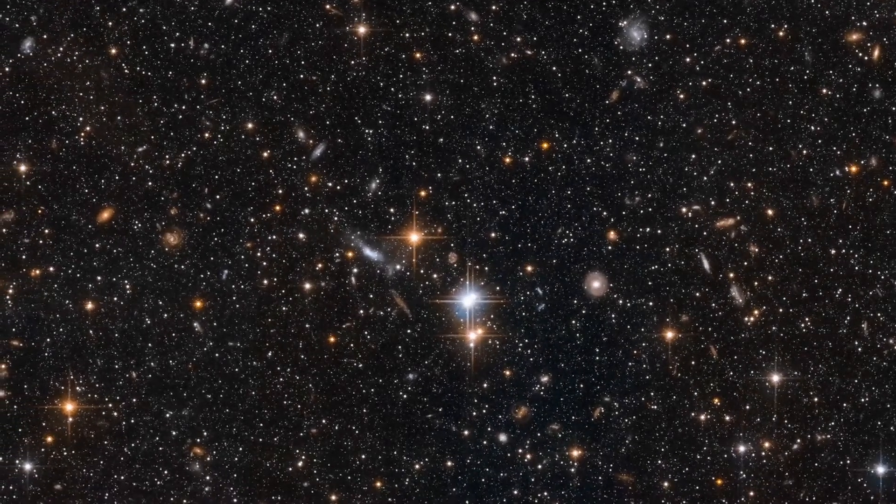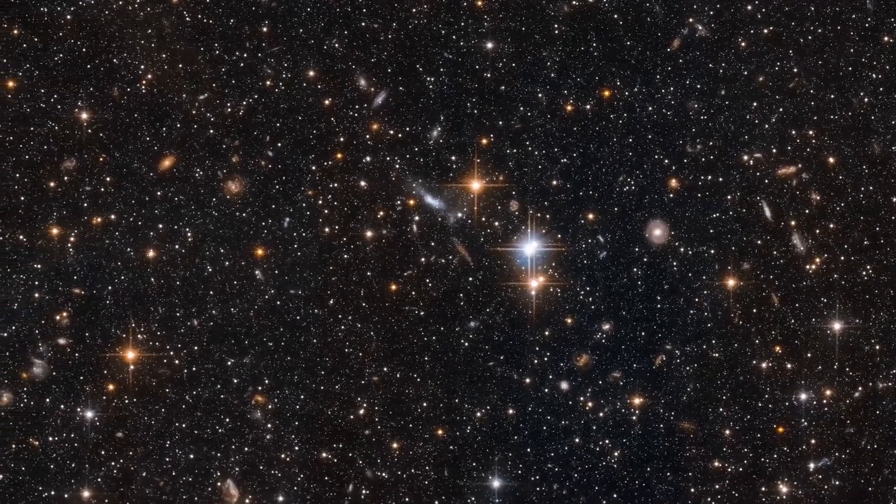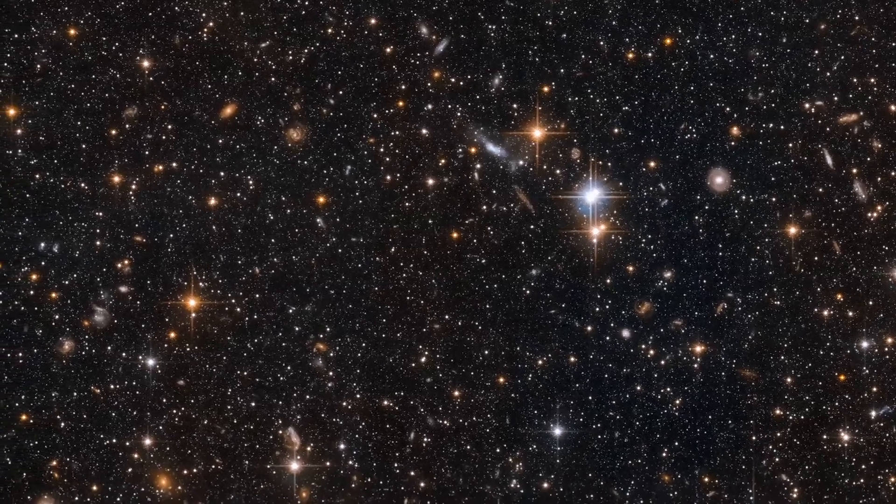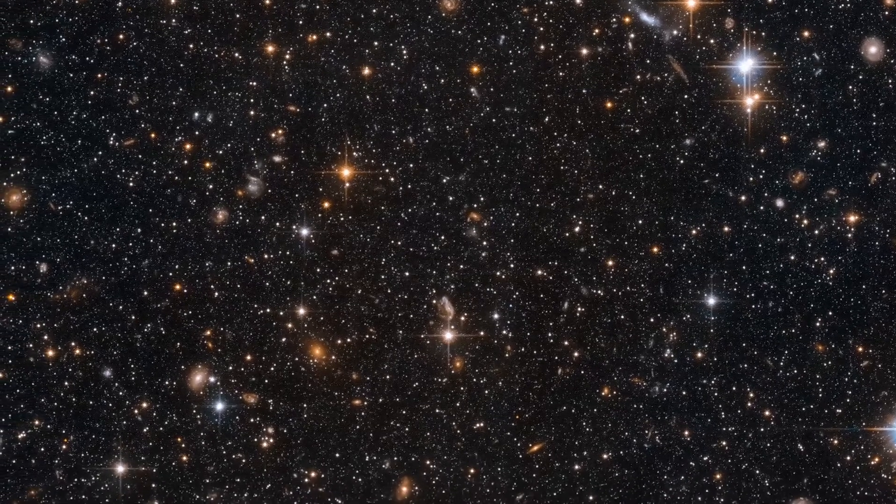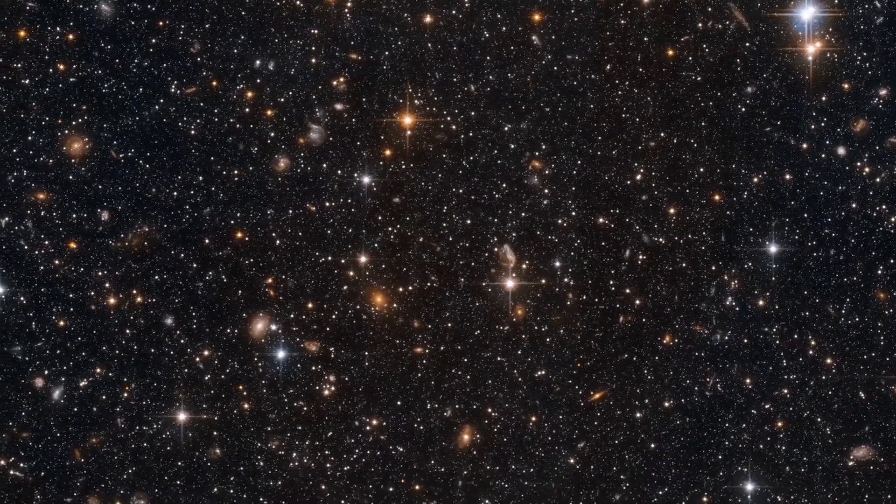Busy as these images look, we're only in the outskirts of the Andromeda galaxy here. That's because these observations were made in order to study a particular type of variable star that is common in the outer reaches of galaxies.